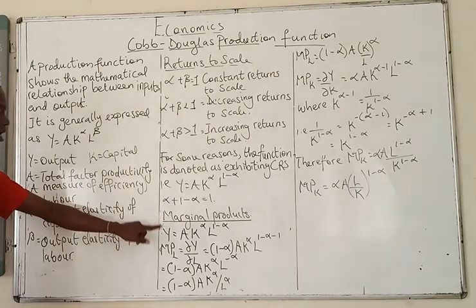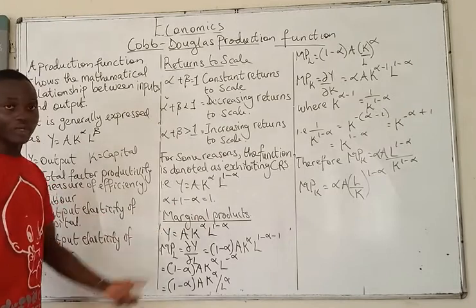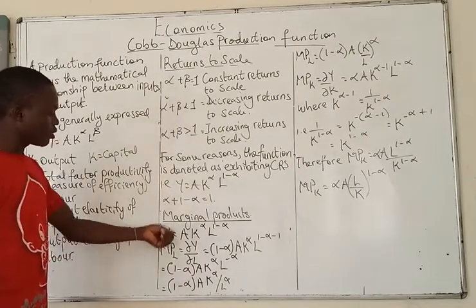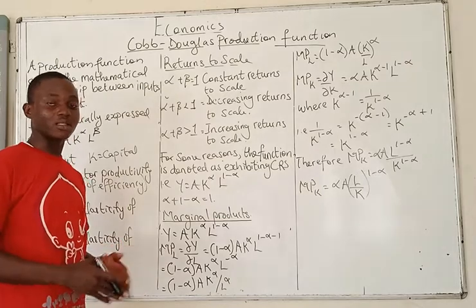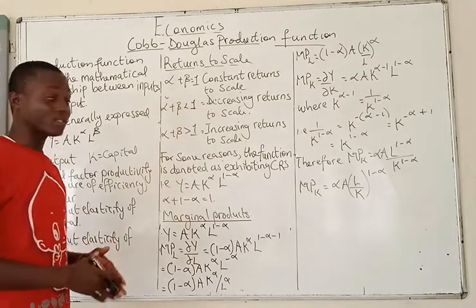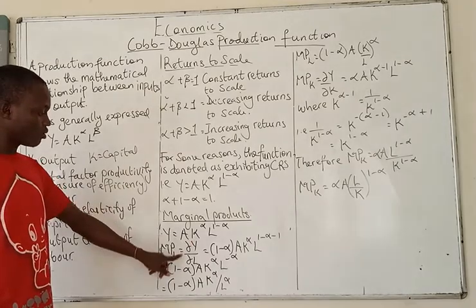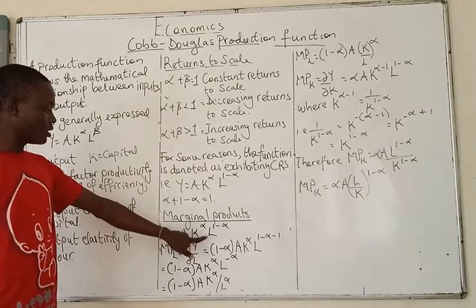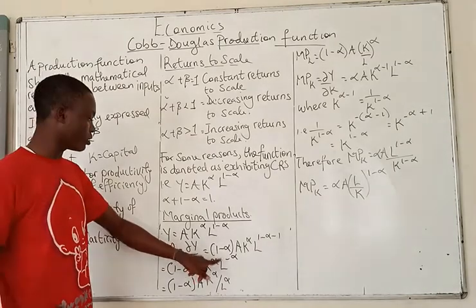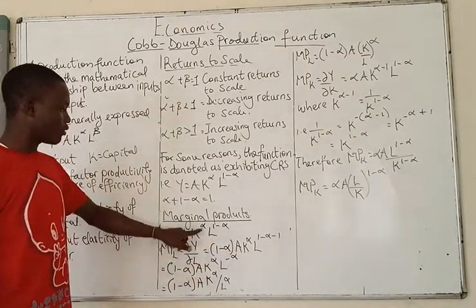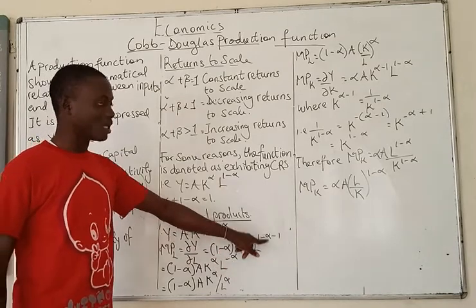Y is equal to A·K^α·L^(1−α). So how do we get the marginal product of labor? It is the change in Y over change in L — we are differentiating with respect to L. So 1 minus alpha comes down from differentiation, then A and K^α remain, and L becomes L raised by (1−α−1), which is L raised by (−α). Just to refresh memory: if Y equals 5X², differentiating gives 2·5·X^(2−1) = 10X — that same rule applies here.